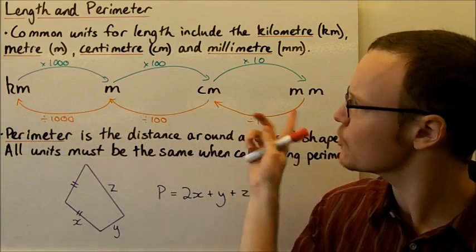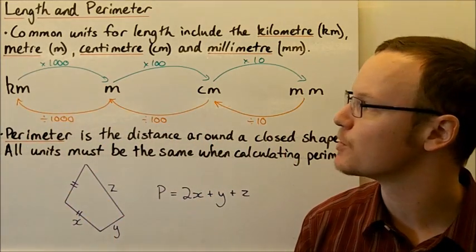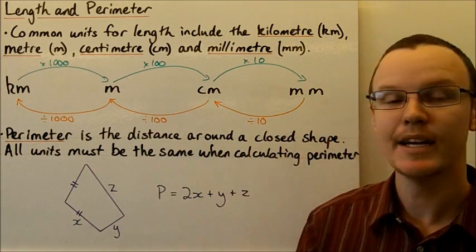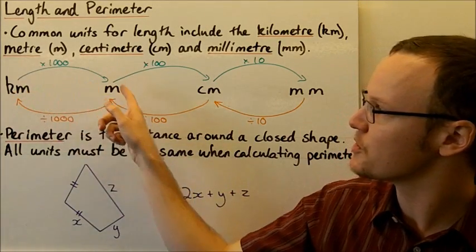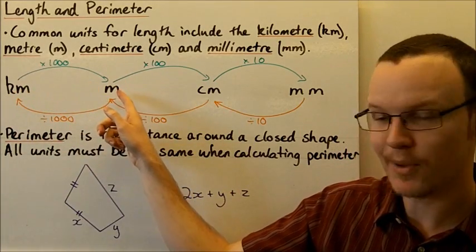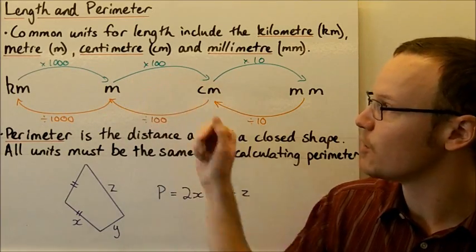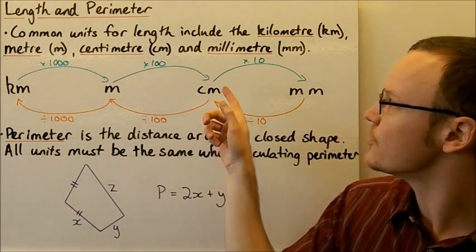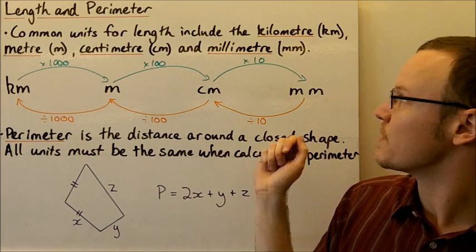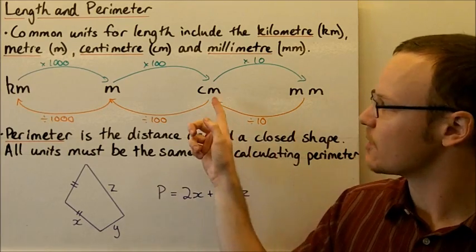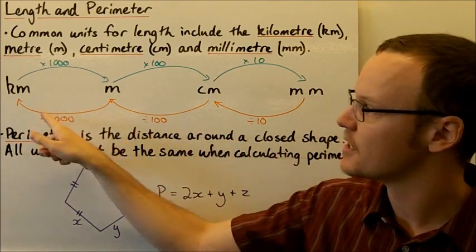Here we've got the conversions showing how we can switch between any of the units. To go from kilometres to metres we multiply by a thousand, metres to centimetres we multiply by a hundred, and centimetres to millimetres we multiply by ten.